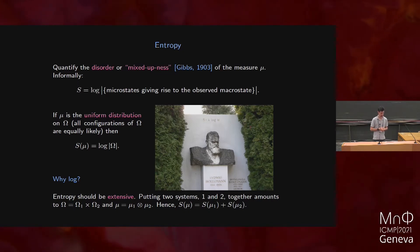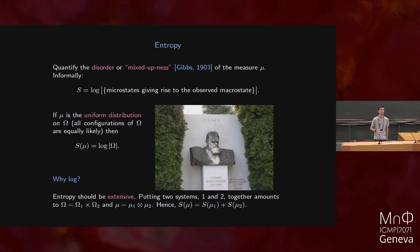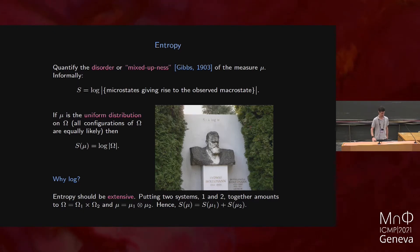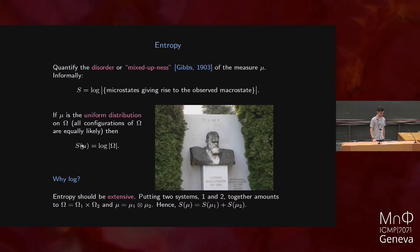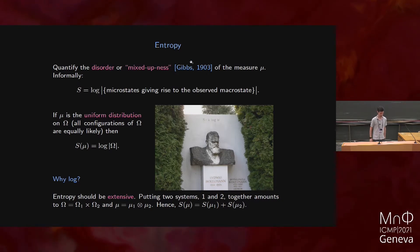Consider the very simple example of the uniform distribution. If you have no clue about what's happening in your system, you guess that all configurations are equally probable. The entropy — the measure of disorder — is just the number of states the system can be in. Instead of taking the number of states, we take the logarithm. This is the famous formula, which is so famous it's even on the tomb of Boltzmann in Vienna.